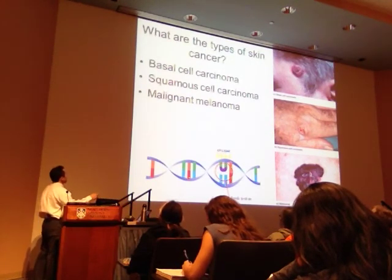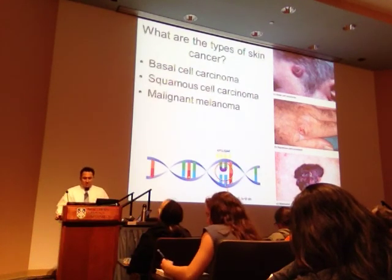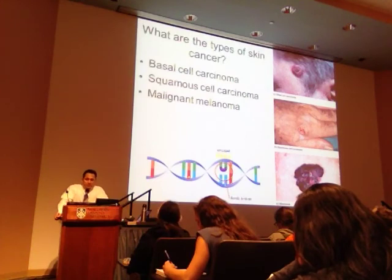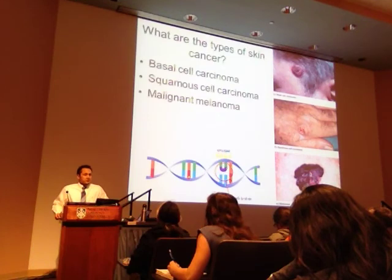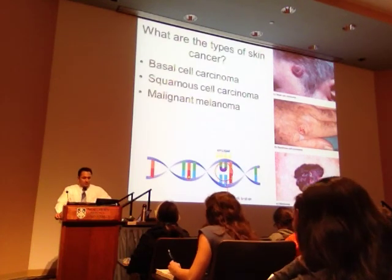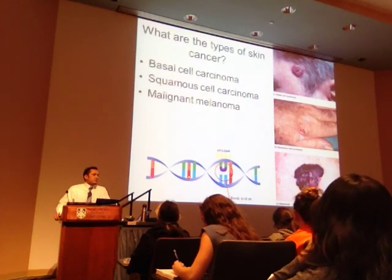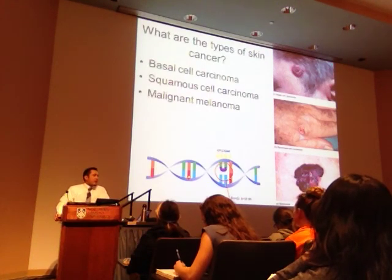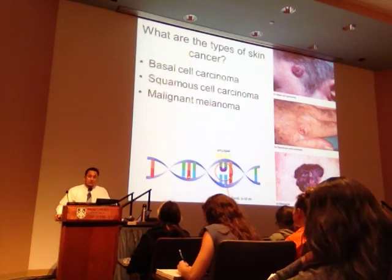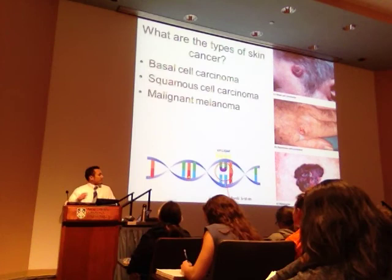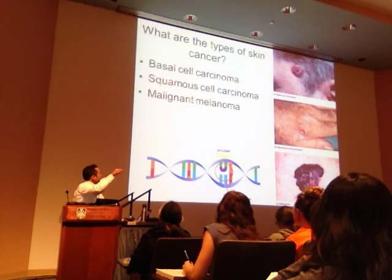If uncontrolled replication occurs at the level of the basal cells, that's basal cell carcinoma — the most common type of skin cancer, affecting about 3 out of 10 Americans. It's actually one of the least aggressive forms because metastasis is very rare. It's still skin cancer and still the most common, but it's usually pretty well controlled.